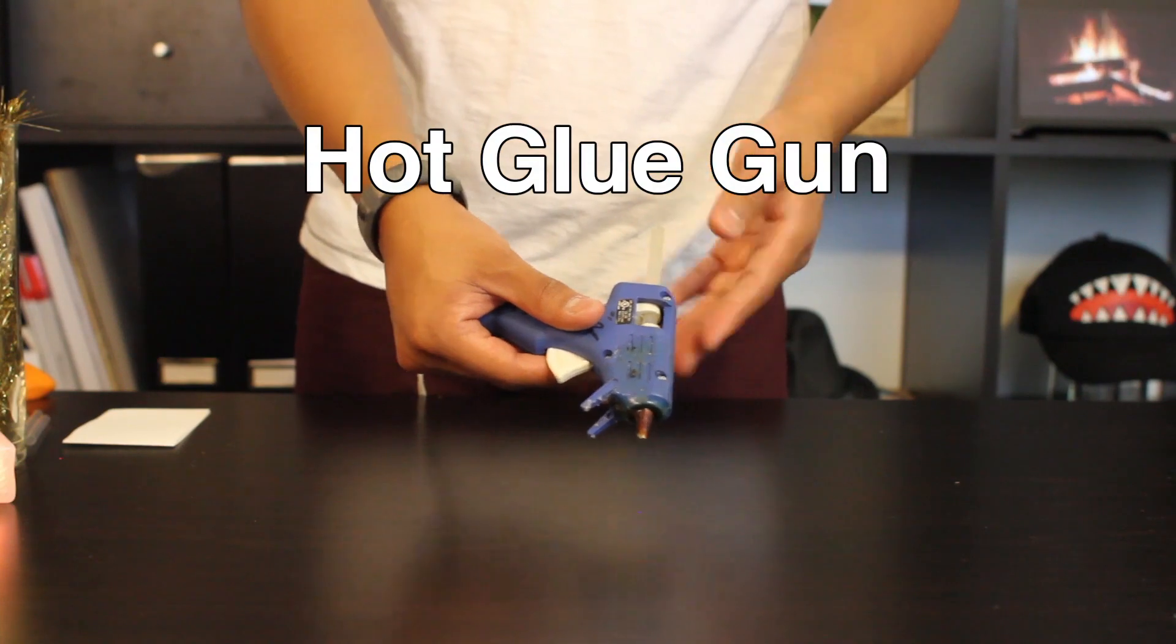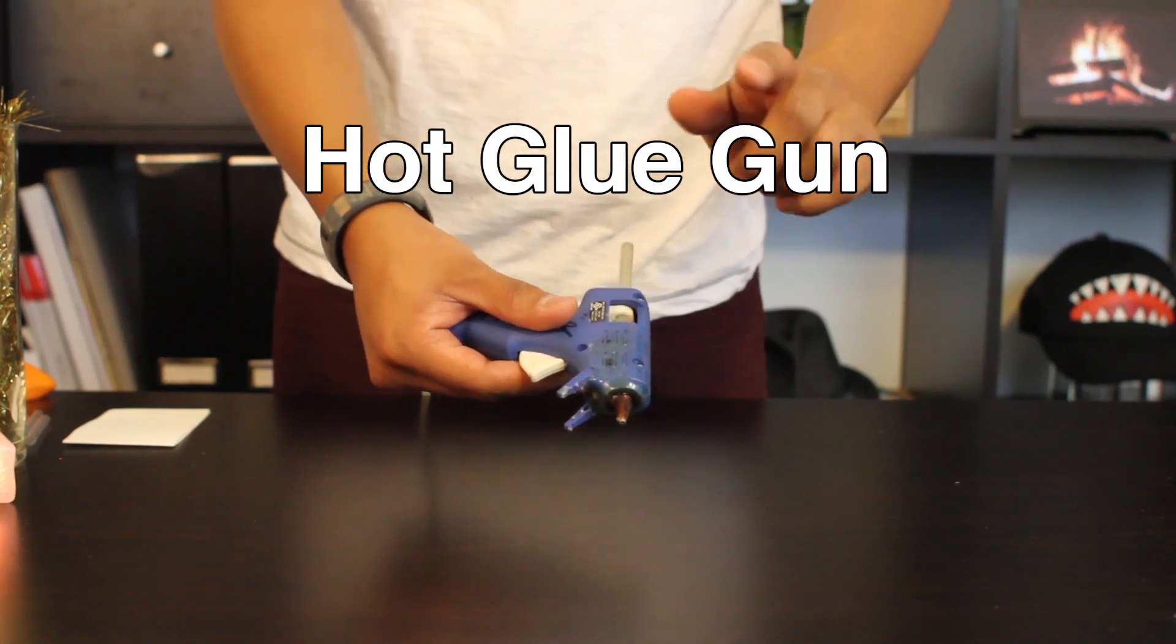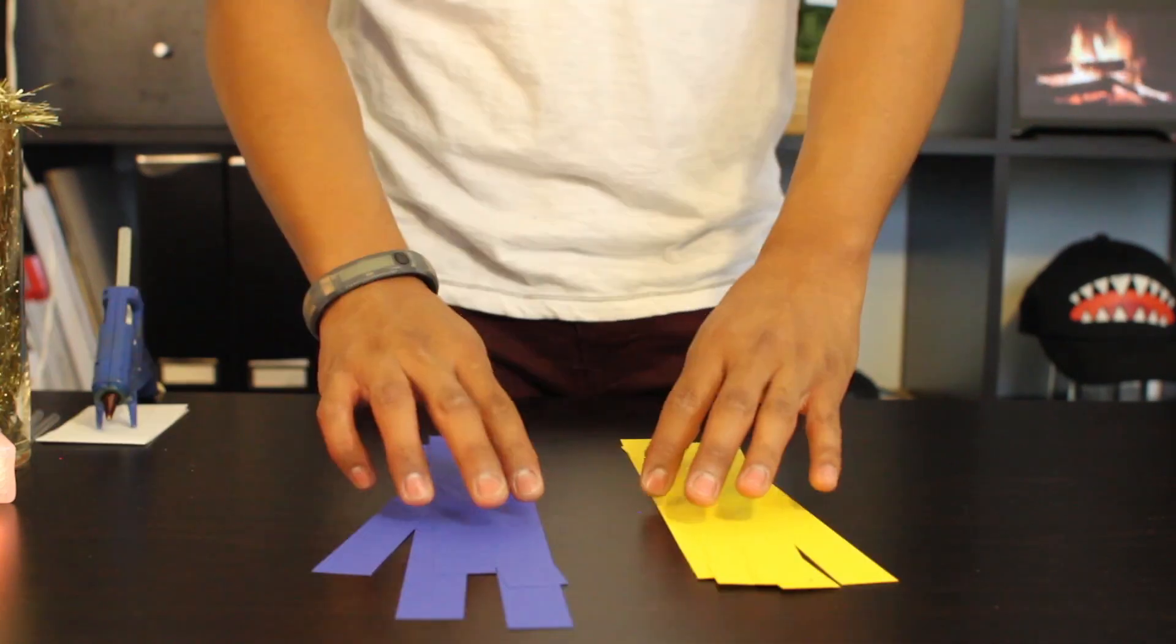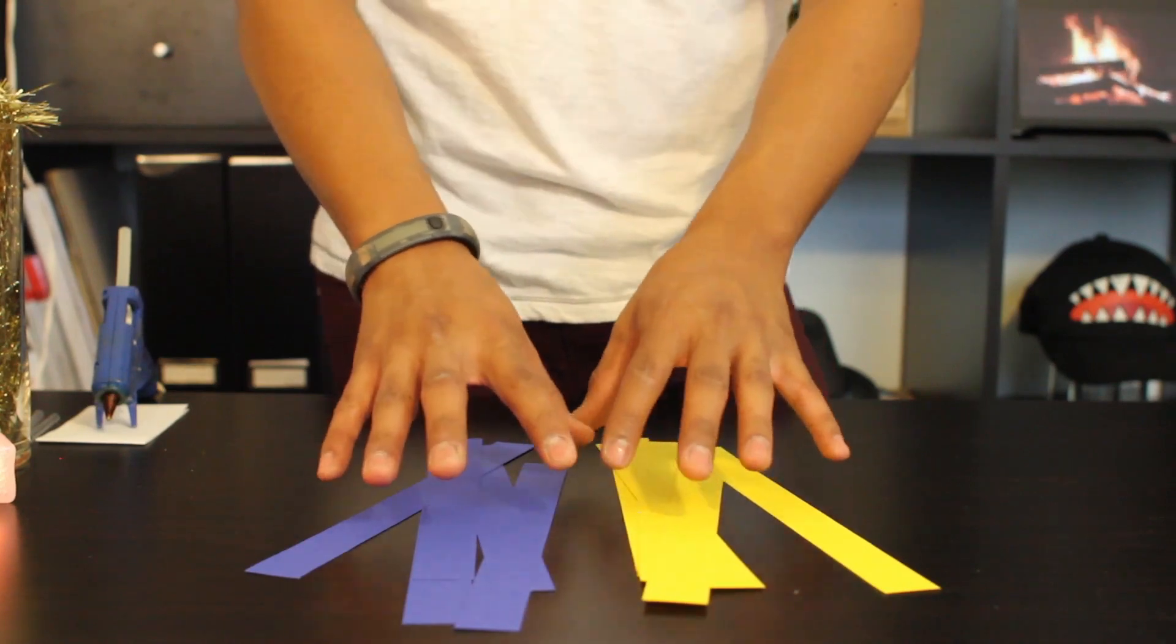And a hot glue gun. It's very important to never touch the tip of a hot glue gun because it will burn. You can use either one color or multiple colors to create your holiday star.